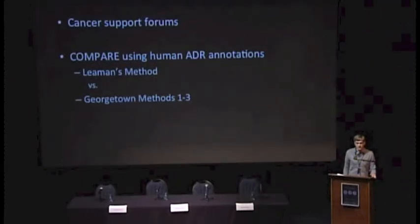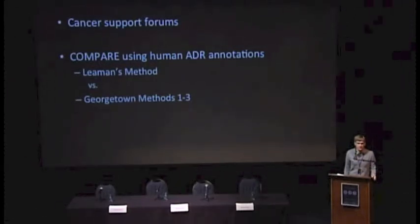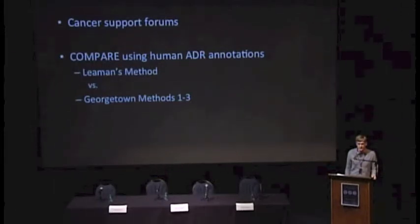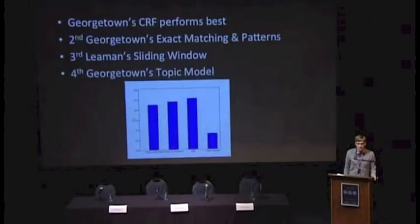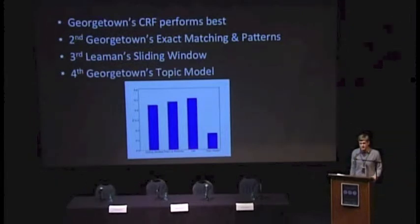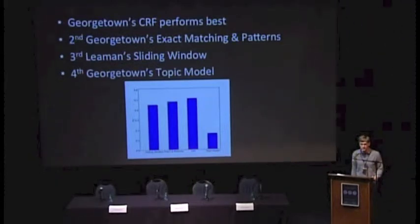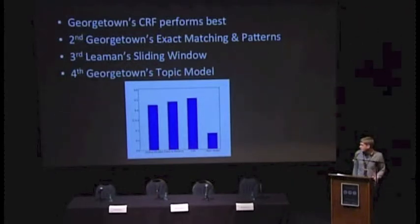We look at cancer support forums that are annotated by humans to indicate which ADRs are actually expressed. We can use these to see how well all our methods perform. When we run this on the forums, the CRF performs best. Exact matching and patterns isn't too far behind. Sliding window isn't too far behind that. The topic model performs very poorly — you can see the relative differences in the bar graphs.